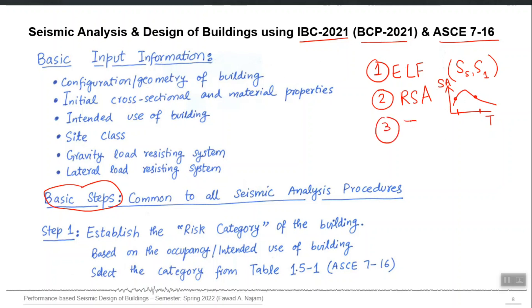The third analysis method is Time History Analysis, also known as Response History Analysis (RHA or THA). All three methods require a linear elastic analysis model. Time history analysis is a rigorous dynamic analysis that requires the complete time history — ground acceleration (ü_g) versus time — as an input. This method is the most accurate because it truly excites your computer model in dynamic motion.